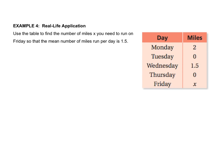Let's move on to the last example number 4. We have to use the table to find the number of miles you need to run on Friday so that the mean, mean remember means average, the mean number of miles run per day is 1.5. So how do you find an average? Well if you forgot I'll tell you. It's you take the total and you divide by the number of items, which in this case will be 5, and then that equals the average.